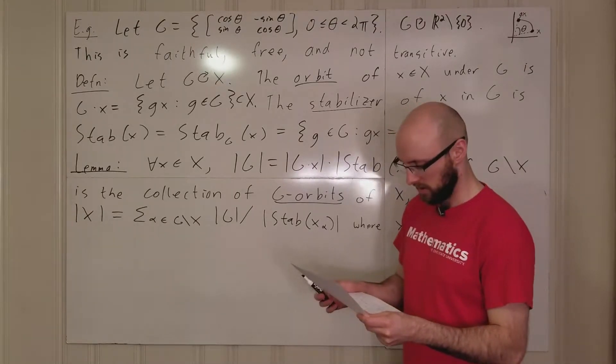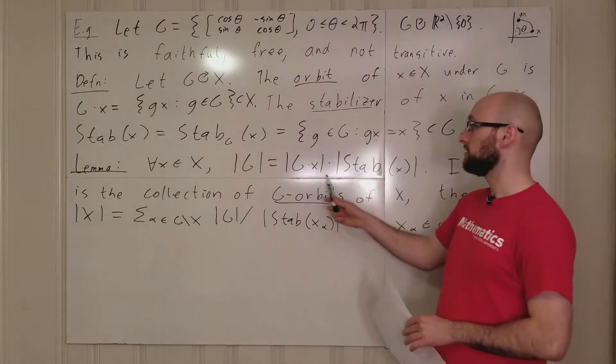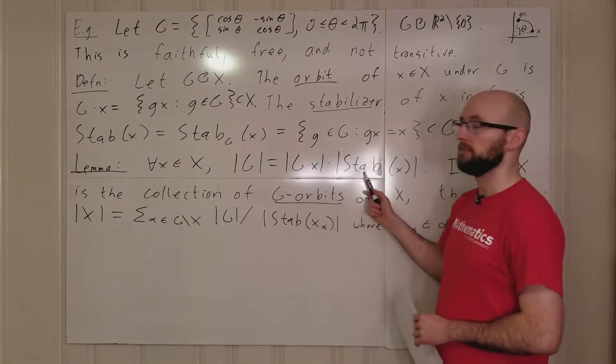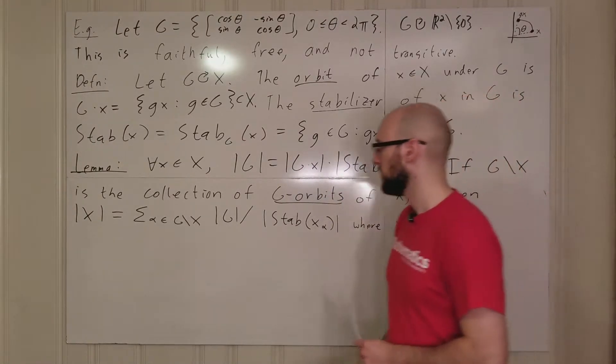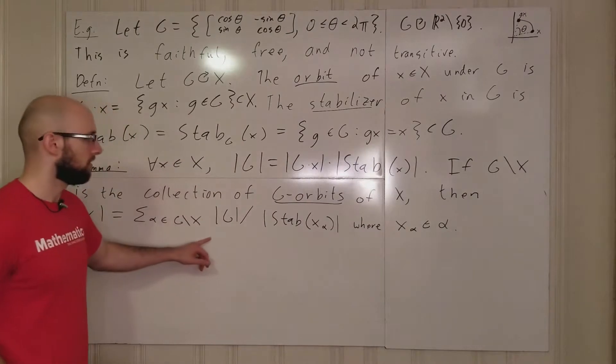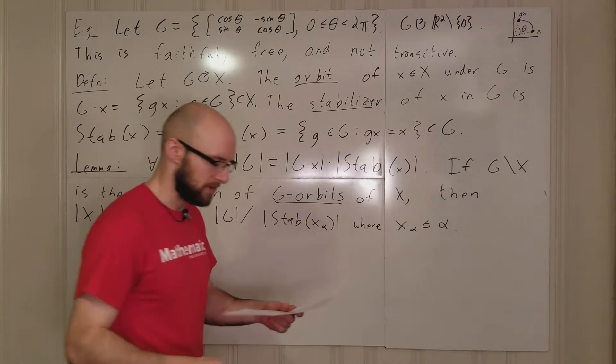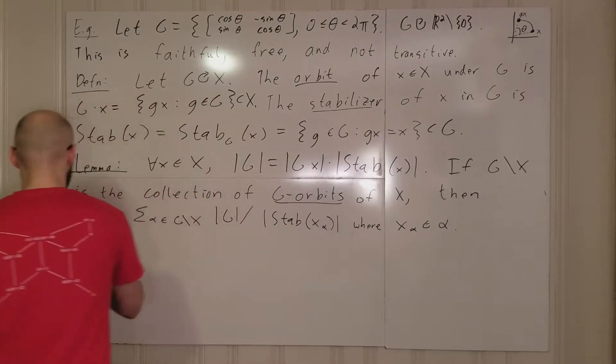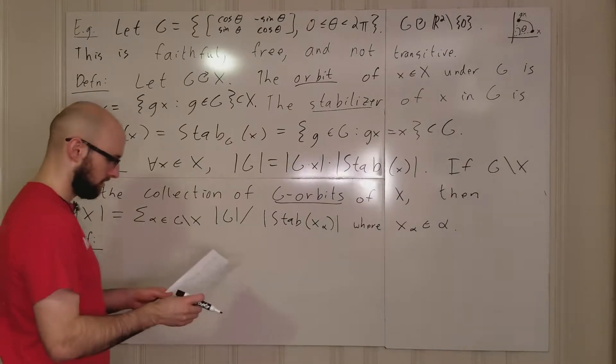So typically, this first one is called the orbit stabilizer theorem because this is the orbit and this is the stabilizer. And when you put them together, you have the orbit stabilizer theorem. This is called, maybe it has its own name probably, but I don't know what it is off the top of my head. I didn't write it down. So we're just going to call it the other thing.